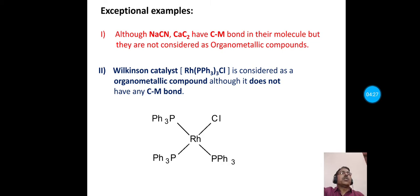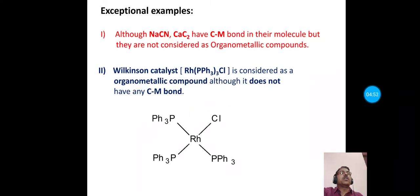The question arises: why is it considered an organometallic compound? The reason is that if we consider its catalytic cycle, there is a step where a carbon-metal bond is formed. So it is considered an organometallic compound, and it is used for the hydrogenation of alkenes and alkynes.